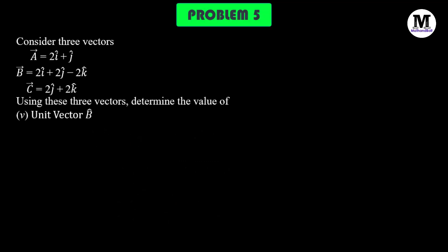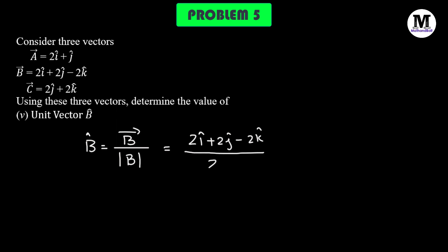Problem number 5: here we need to find out the unit vector B. The unit vector B is defined as the vector B divided by its magnitude. So for vector B we have 2i cap plus 2j cap minus 2k cap, and that will get divided by the magnitude which we already determined in the previous problem, that is 2 times square root of 3. Finally, we get 1 over square root of 3 multiplied to i cap plus j cap minus k cap.